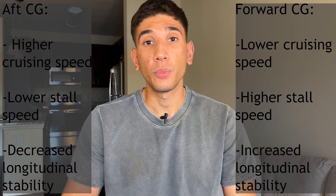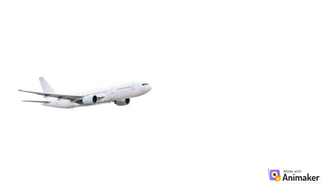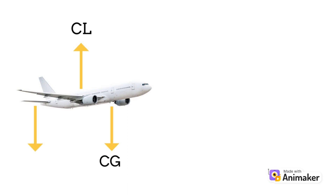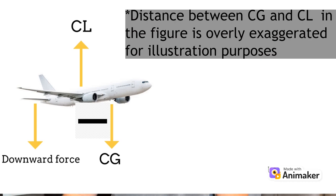Today we'll take it one step further and discuss the process which results in those characteristics. To understand the process, we need to cover three forces. The first is the center of gravity — CG — which acts downward toward the center of the earth. The second is the center of lift, defined as the point on your airfoil where most lift is generated, and it acts upward. The third is the downward force, generated by your horizontal stabilizer, which also acts downward.